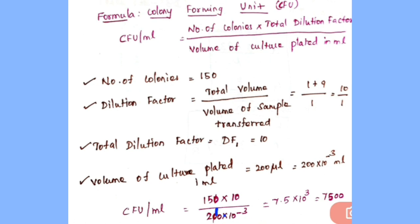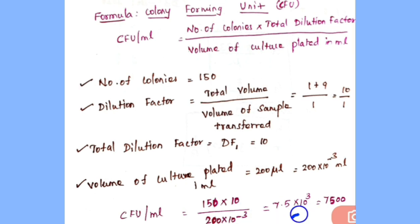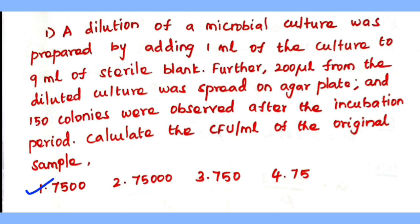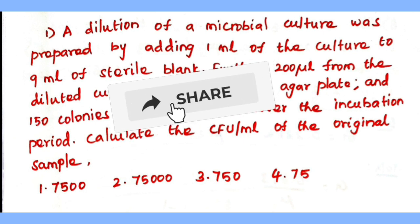Cancelling the two zeros, we get 15 divided by 2, which equals 7.5. The 10 to the power of minus 3 in the denominator moves to the numerator as 10 to the power of 3. So, 7.5 times 10 to the power of 3 equals 7500. Therefore, option 1 is the correct answer.